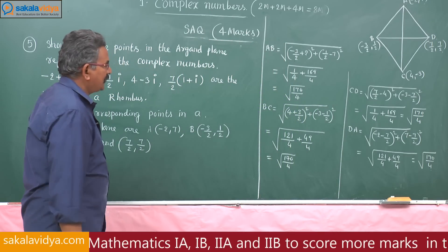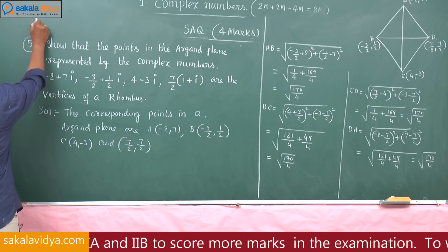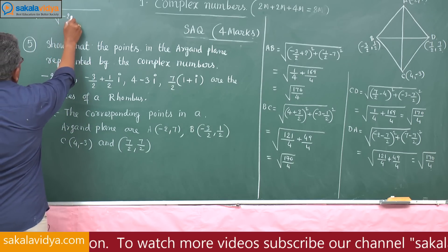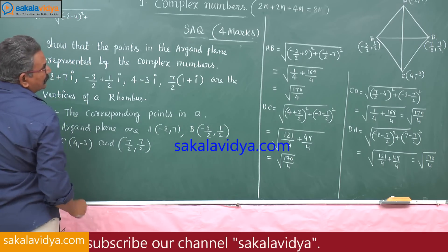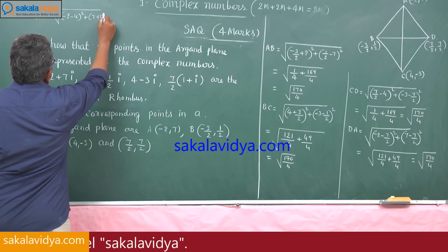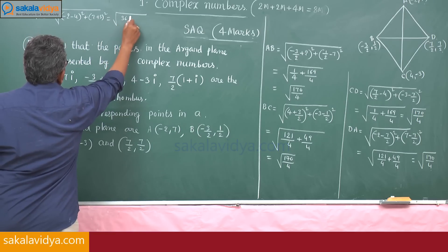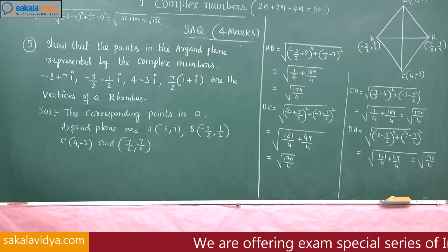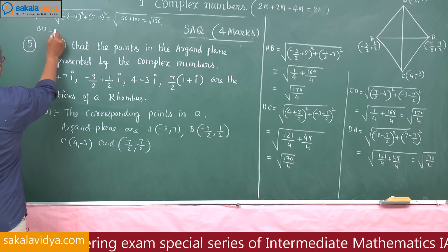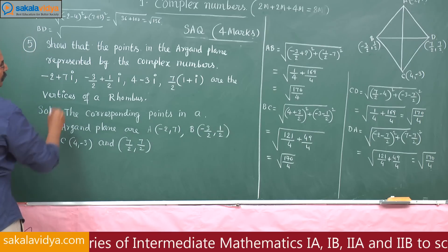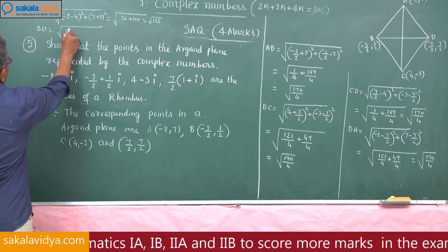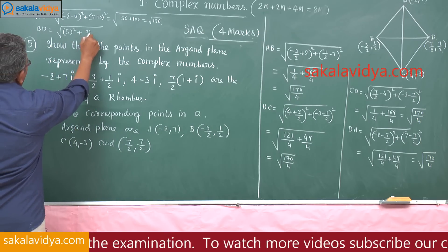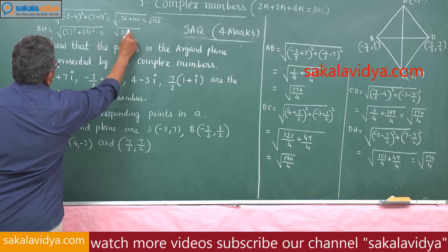Now let us find the diagonals. AC is root of (minus 2 minus 4) squared plus (7 plus 3) squared, which is root of 36 plus 100, giving root 136. And BD is root of (7 by 2 plus 3 by 2) squared plus (7 by 2 minus 1 by 2) squared, giving root of 25 plus 9, which is root 34.